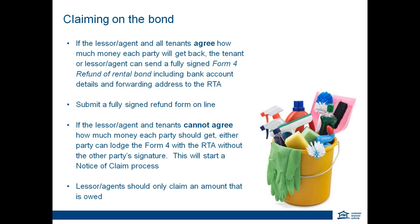If the lessor agent and the tenants all agree on how the bond is to be paid at the end of the tenancy, then all parties sign and complete the Form 4, the refund of rental bond, including your bank account details, and forward that to the RTA. You can submit a fully signed refund form online — just go to the RTA's website for more information. To submit online, the form has to be fully completed and signed by all parties and include an Australian bank account for all parties. This is the quickest way to get the refund.